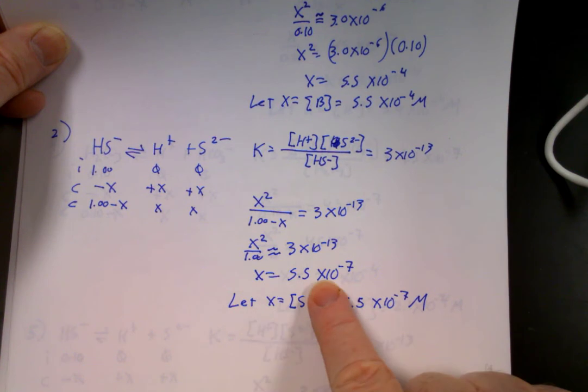And when I solve it, x is equal to 5.5 times 10 to the negative 7th. So the concentration of S2 minus is 5.5 times 10 to the negative 7th molar. Pause if you need to.